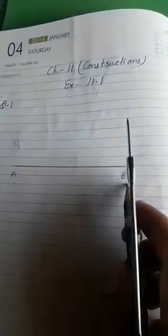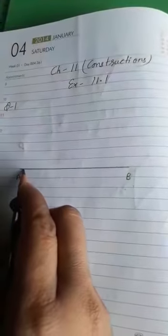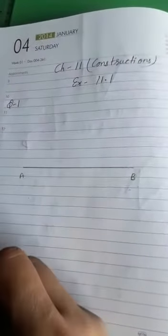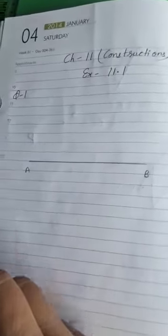In the first question we have to construct an angle of 90 degrees with the initial point of a given ray. So here we have given a line AB and its initial point is A. Here we have to draw an angle of 90 degrees. Let us see how to draw.